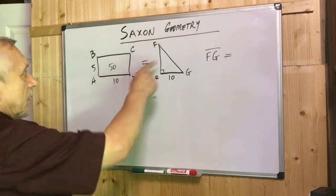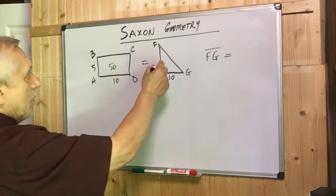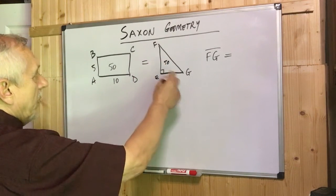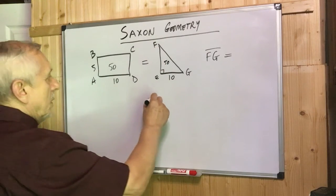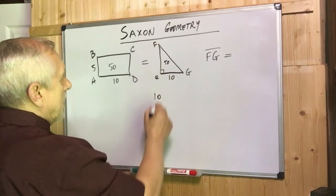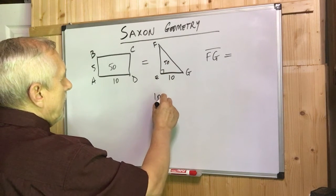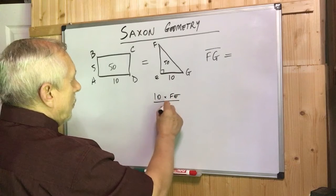So we know the areas are equal, 50 equals 50 here, but how we find the area here is 10 times this leg FE over 2.